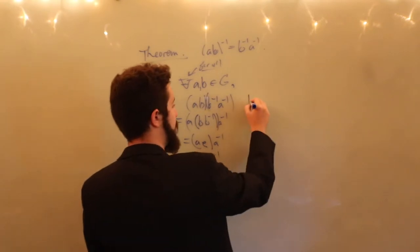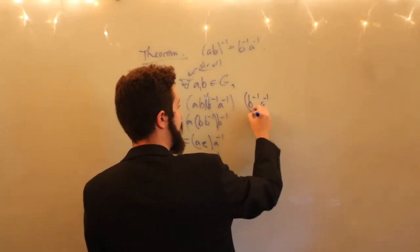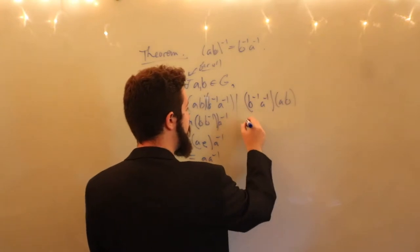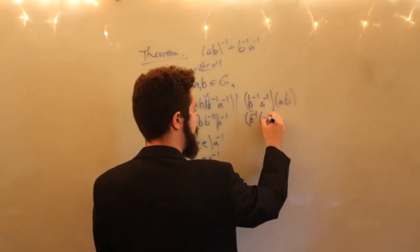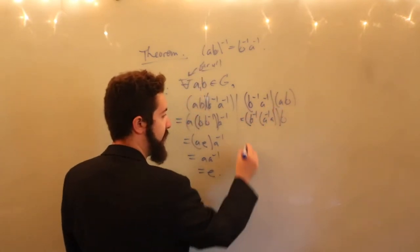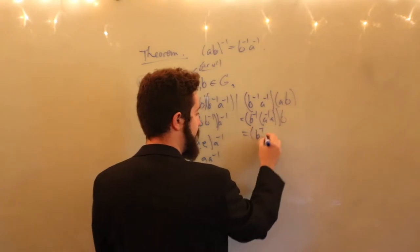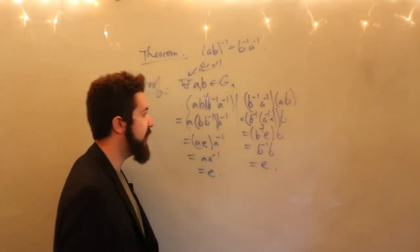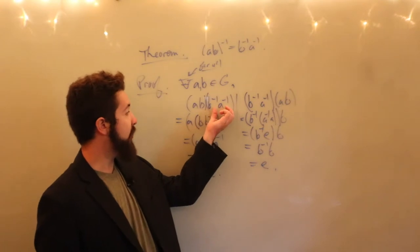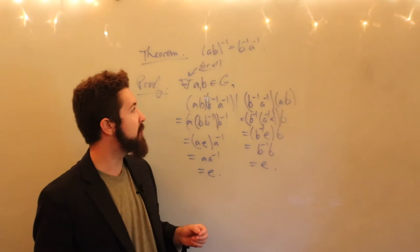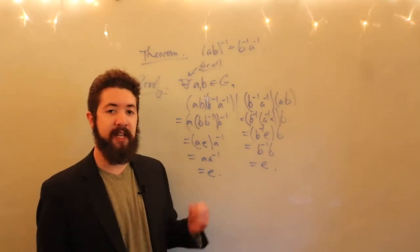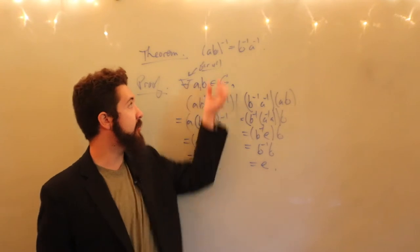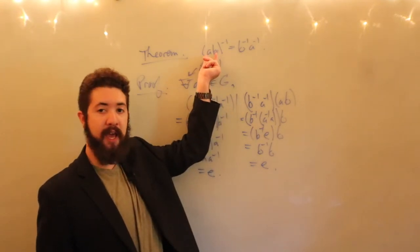Now let's check the other side: (B inverse A inverse) times AB. By associativity, this equals B inverse times (A inverse A) times B, which equals B inverse times E times B, which equals B inverse times B, which equals the identity. Thus B inverse A inverse is both the left and right inverse of AB. By our previous theorem on uniqueness of inverses, B inverse A inverse is the unique inverse of AB in G.